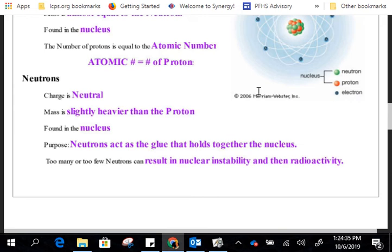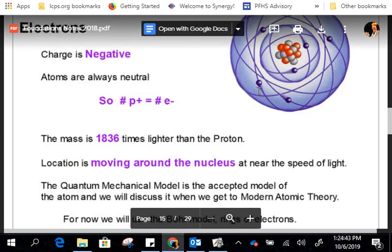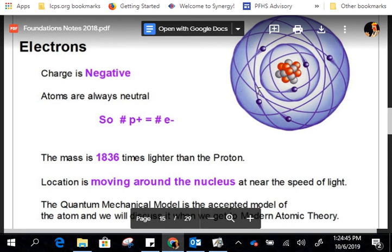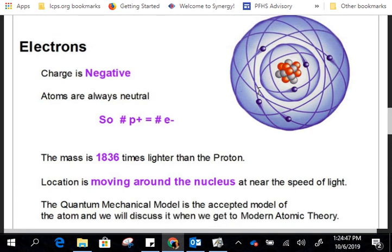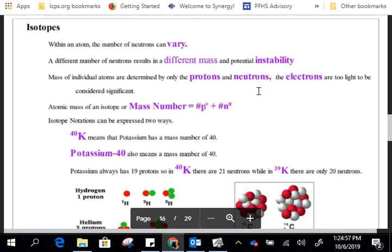They act like the glue that holds the nucleus together. But if you have too many or too few, the nucleus becomes unstable. More on radioactivity in just a minute. Electrons are flying around the nucleus really, really fast. We're going to get a whole chapter on that later. The mass of an electron is way lighter than a proton or neutron, so they don't get factored into mass calculations. Isotopes. So we were just talking about how the neutrons can vary. This is one key equation you need to know. Mass number equals protons plus neutrons.